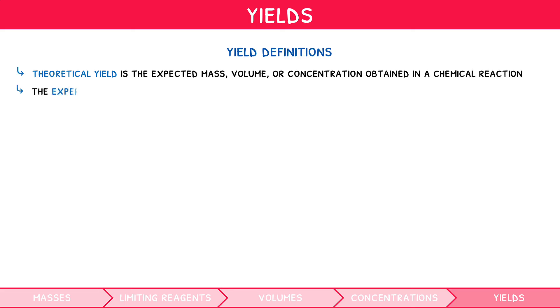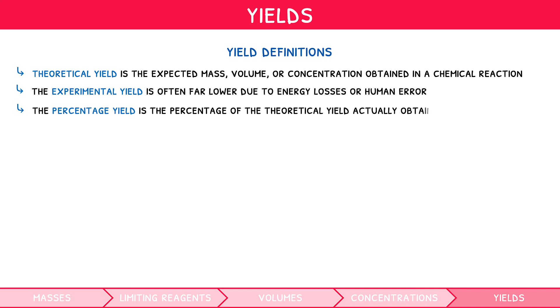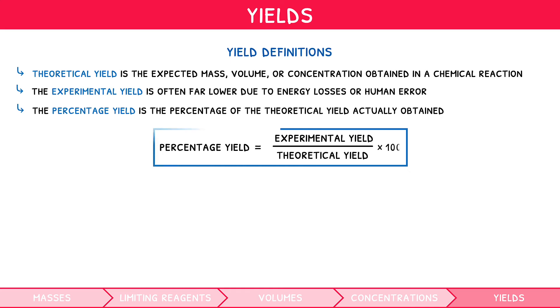Let's move on to the final section of this video, yields. Throughout this video, we have been calculating what are called theoretical yields, i.e., based purely on paper, the expected mass, volume, or concentration one would expect to obtain in a chemical reaction. However, the experimental yield is often far lower due to energy losses or human error that accompany all chemical reactions. In the IB chemistry syllabus, you can be asked to calculate the percentage yield, which is simply the difference between these two values, i.e., what percentage of the theoretical yield was actually obtained. It can be thought of akin to the efficiency of a reaction. The formula for percentage yield is experimental yield divided by theoretical yield multiplied by 100.